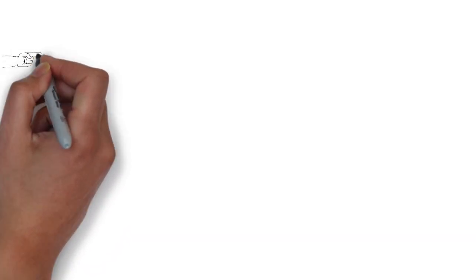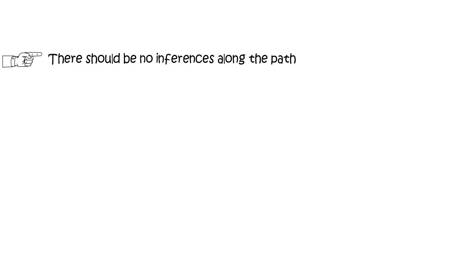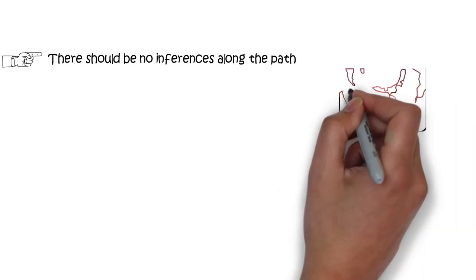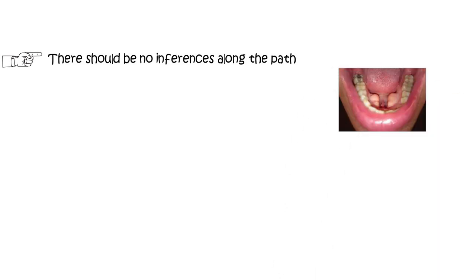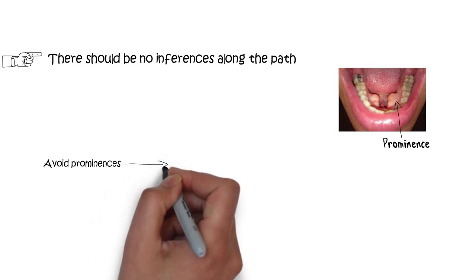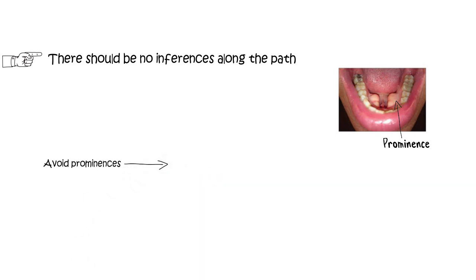There should not be any bony or soft tissue prominence along the path of insertion or removal of the major connectors. The major connector should be designed so that it does not strike any prominence along its path, as that will only result in trauma to the structures.